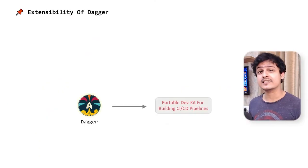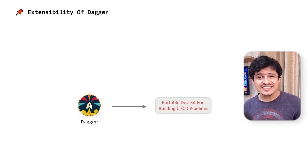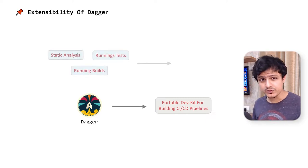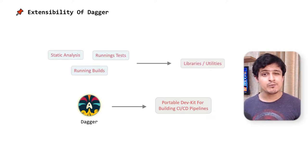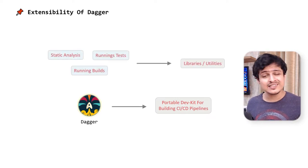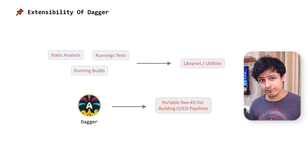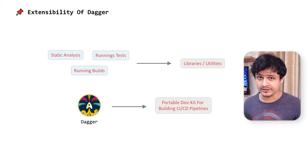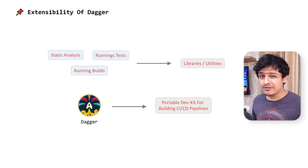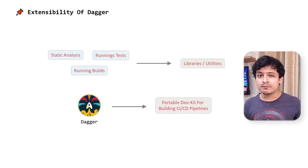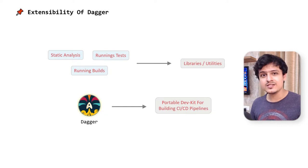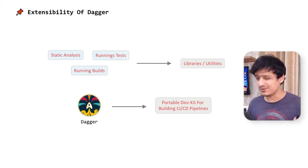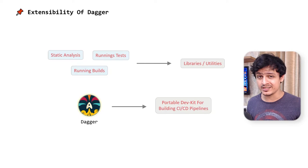Dagger is a CI/CD dev kit. And since Dagger is so portable, any libraries or utilities built on top of it will be portable as well — at least in theory. Now if enough smart people buy into this, the wealth of libraries Dagger has to offer can potentially rival something like Jenkins.